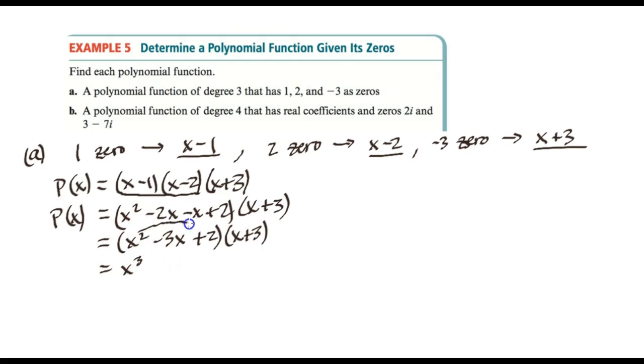So x squared – let's use arrows to keep track of each of these. x squared times x. x squared times 3 is plus 3x squared. Let's use colors here. Negative 3x times x and negative 3x times 3. So that would be negative 3x squared and then minus 9x. Then we'll use brown here. 2 times x and 2 times 3. So that's plus 2x and plus 6.